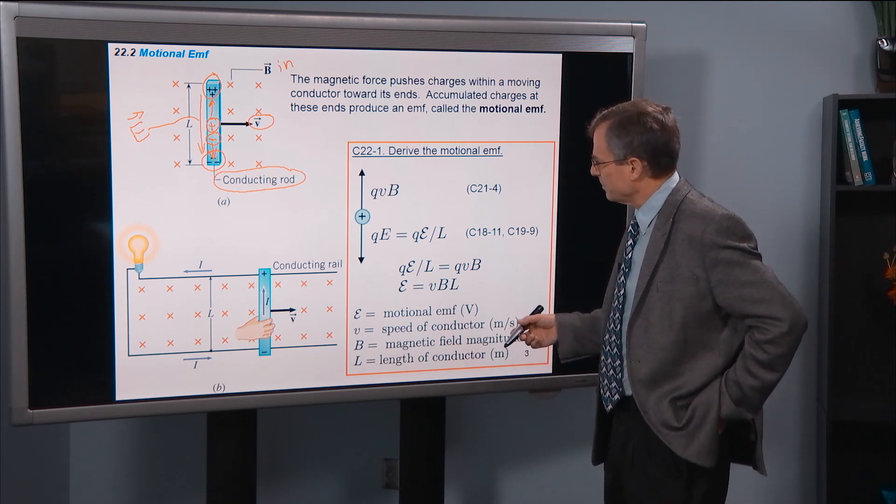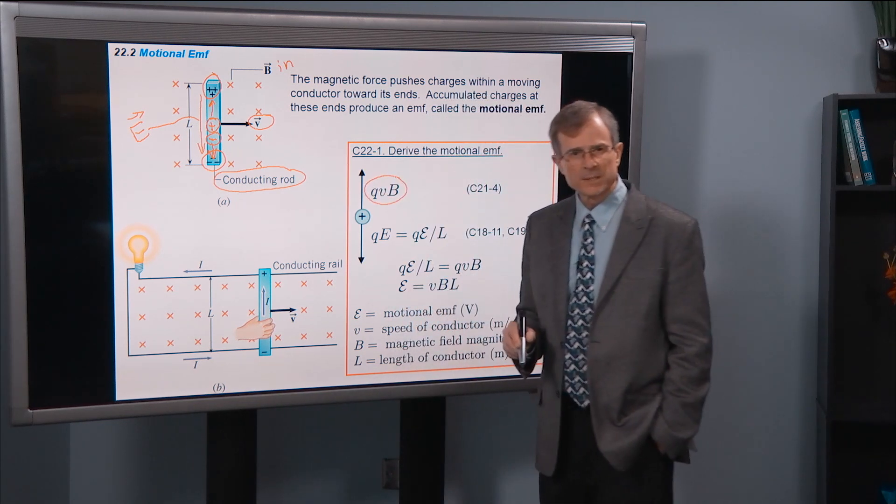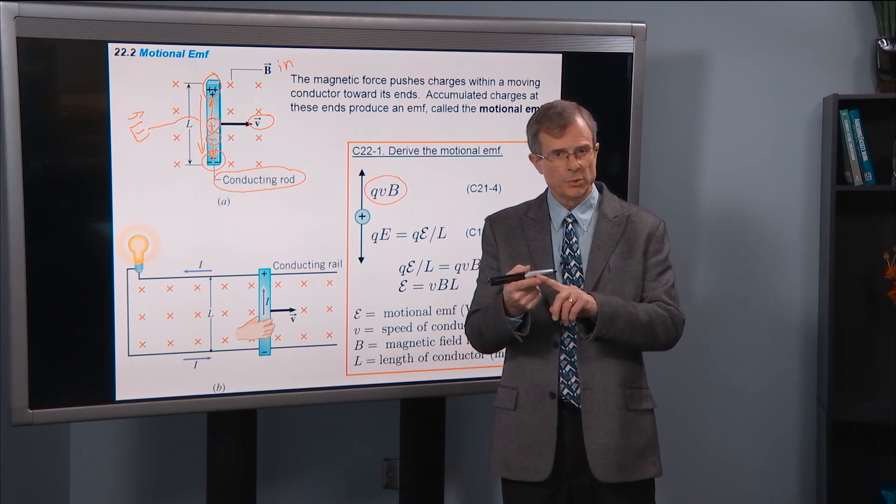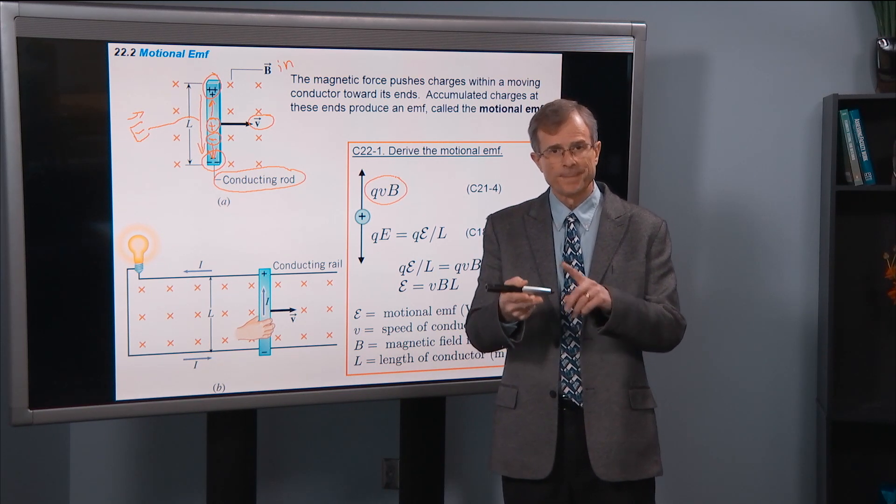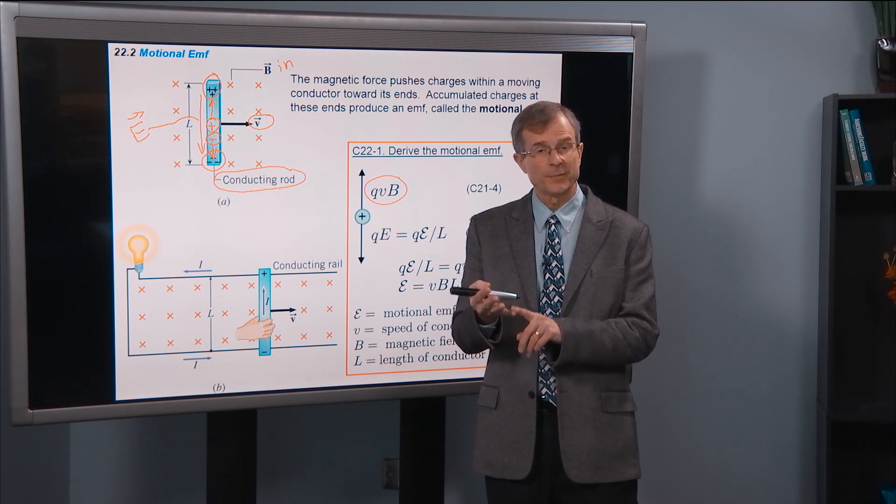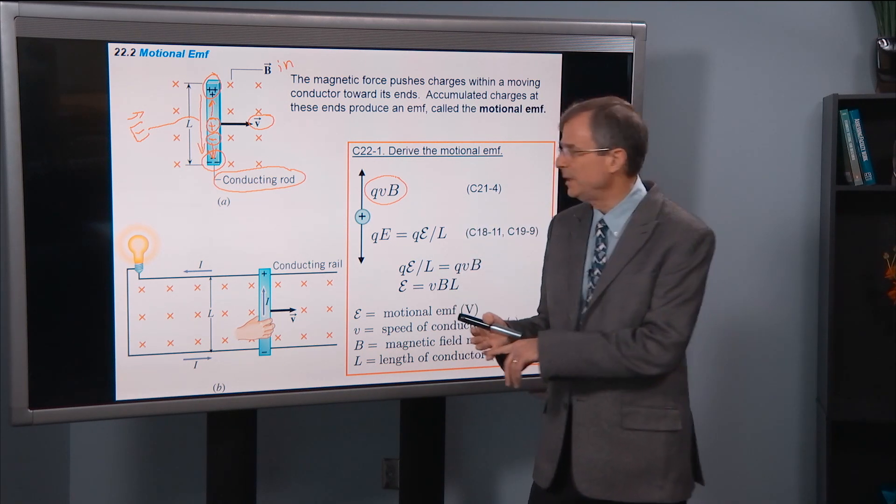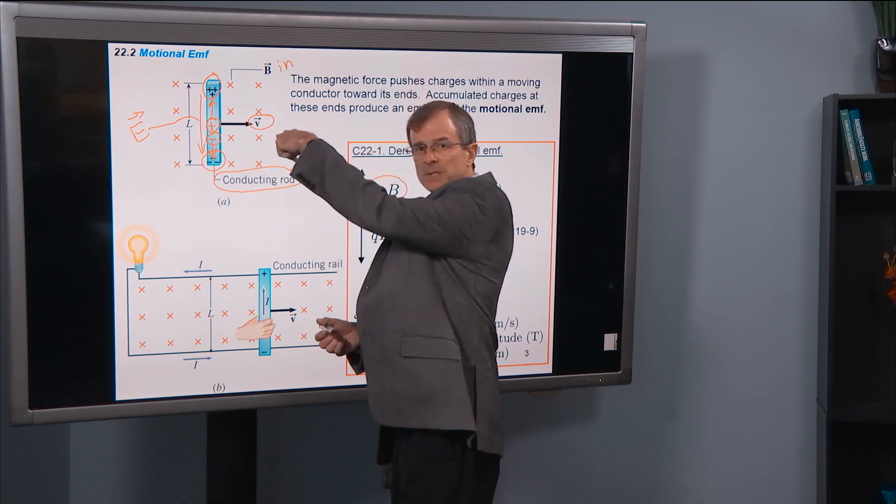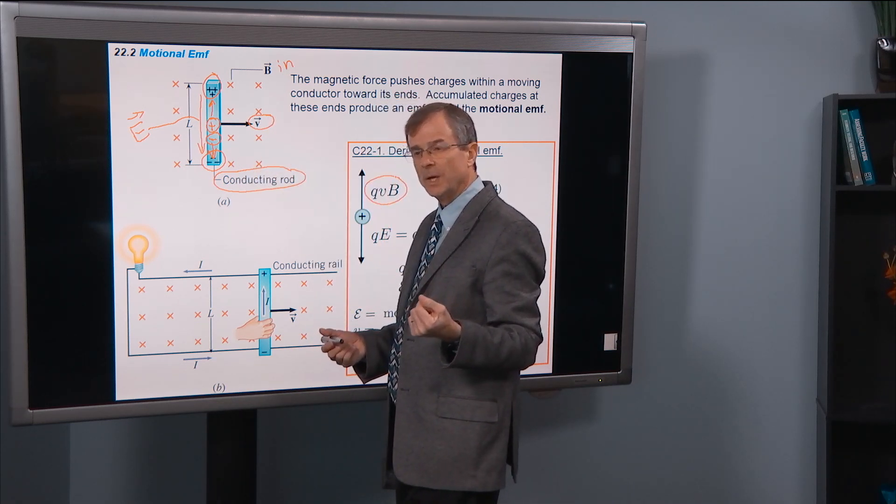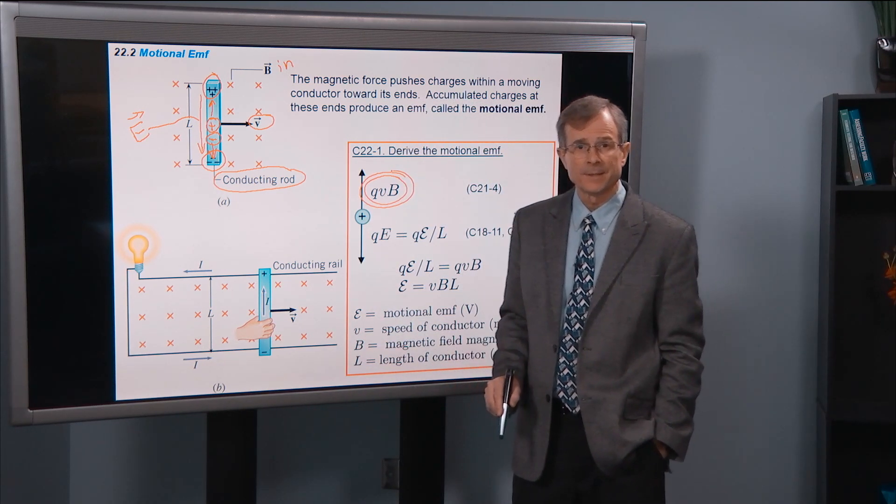A couple of steps. So the magnetic force on that positive charge particle, if you might remember, the magnetic force is q, magnitude of the charge, times v, times B, times the sine of the angle θ. And that's the angle between v and B. Here's v. B is into the screen. The angle is 90. Sine of 90 is 1. So this is the magnetic force on that charge.